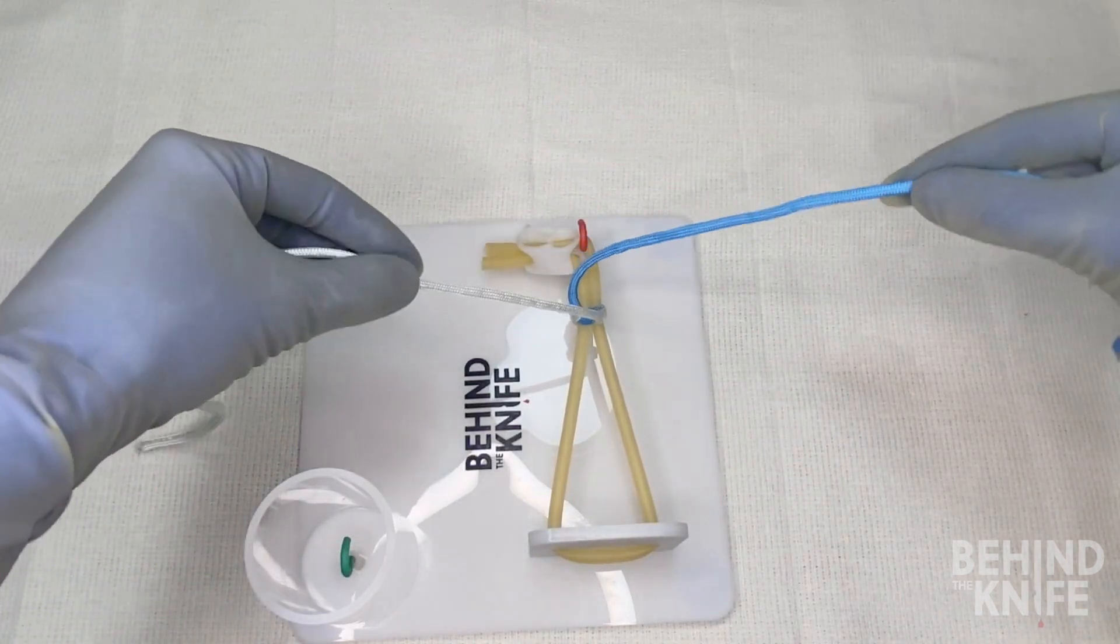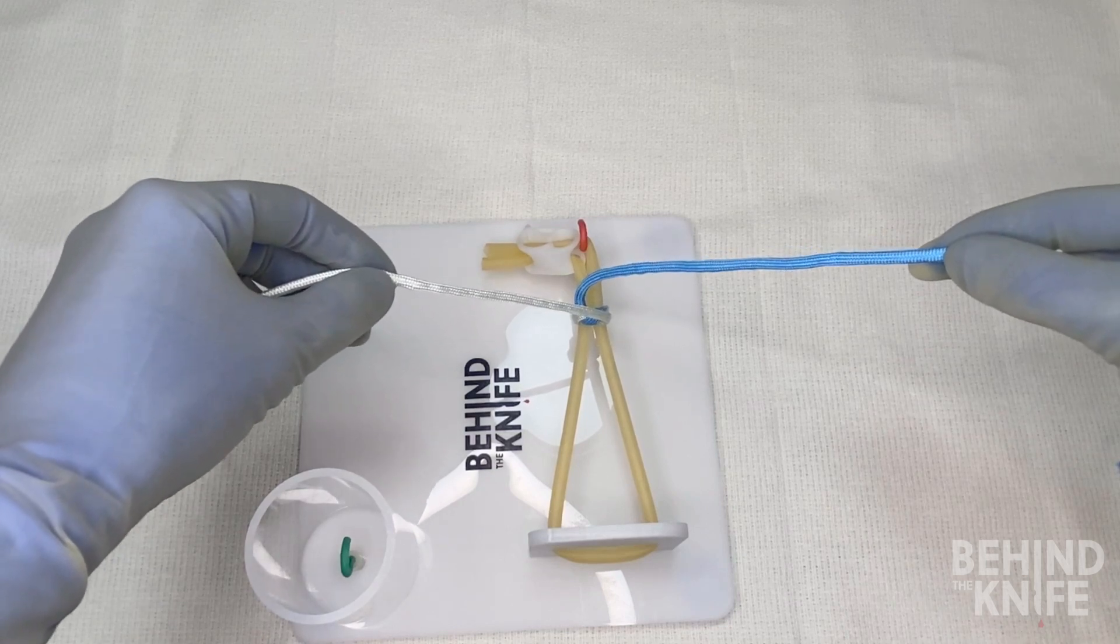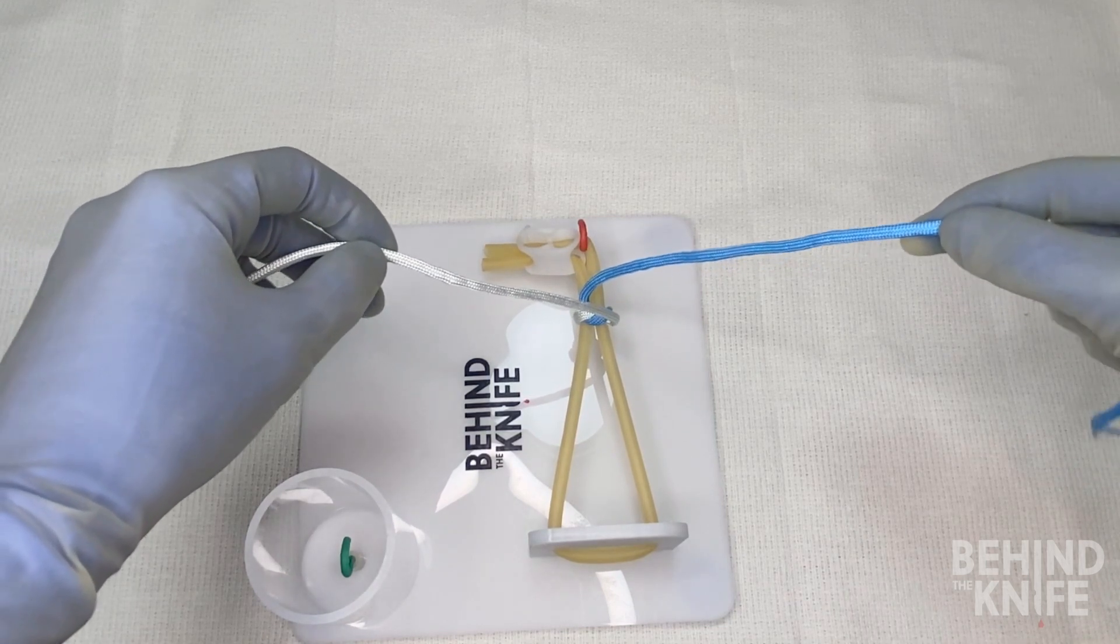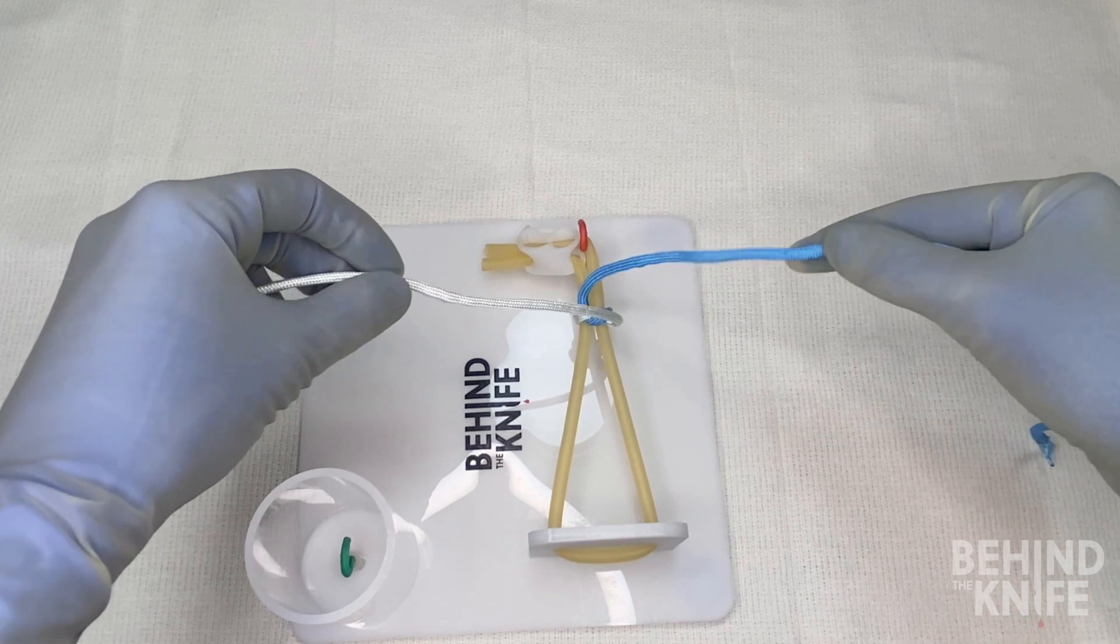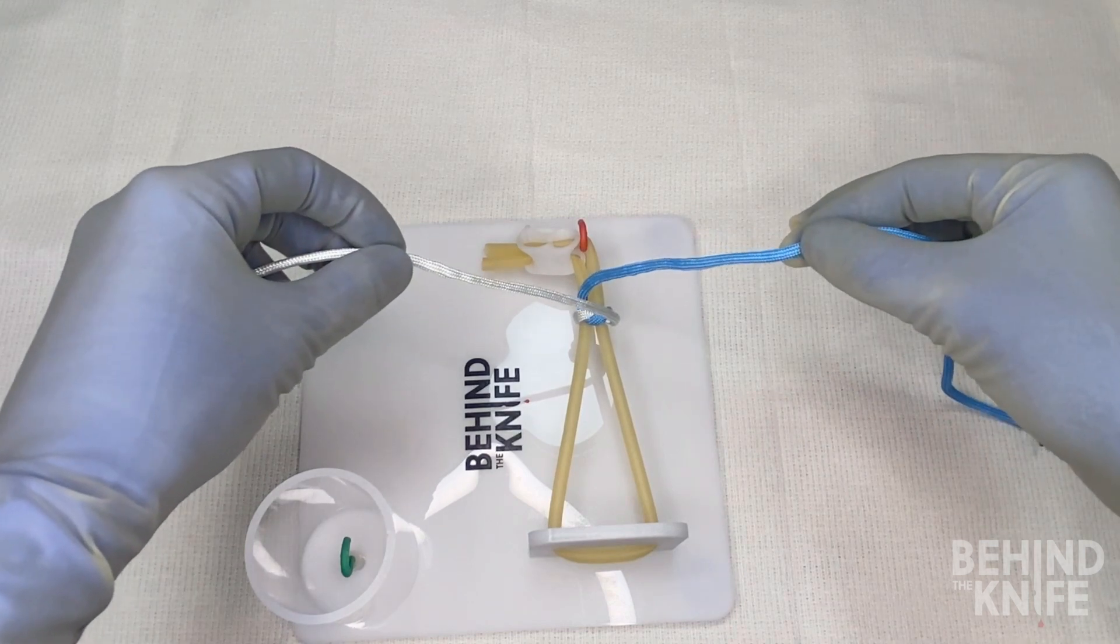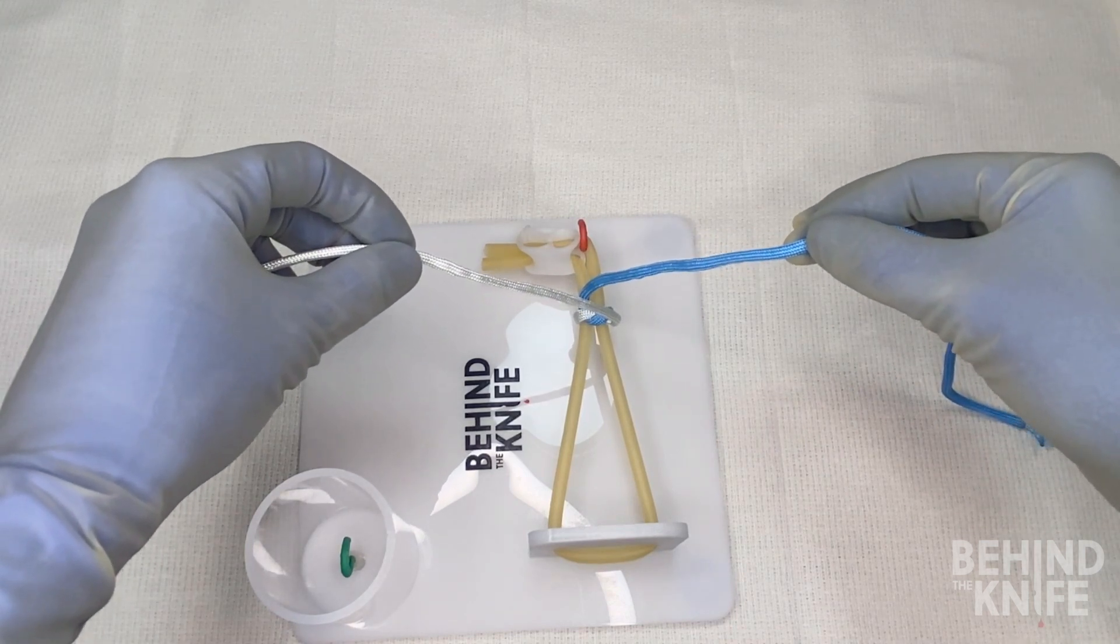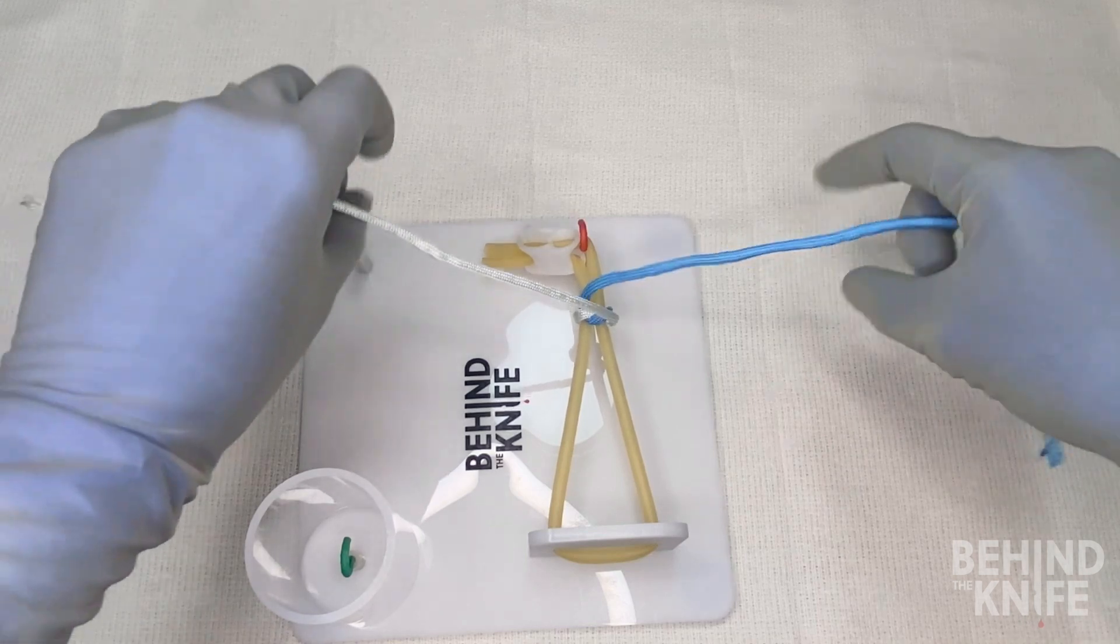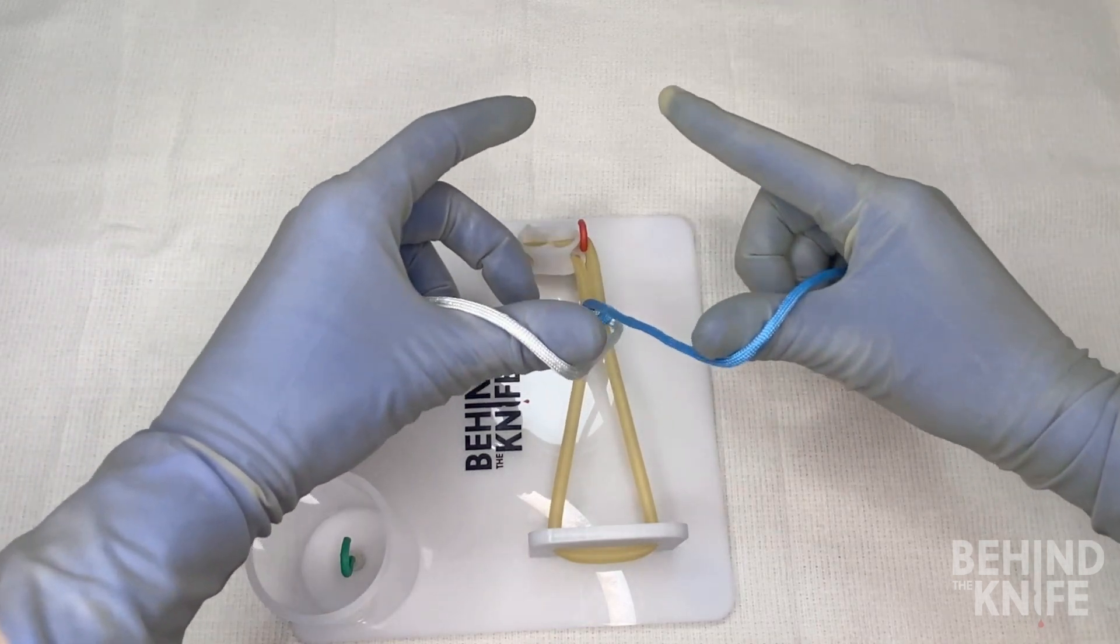Now this is just one half of our knot. In order to continue throwing square knots, what we'll have to do is switch from our L's to those C's that we talked about before. You'll pick up the same side of the string in the same hand that you had before, but instead of making L's, what we'll do is we'll make C's with the string draped around our thumb as such.